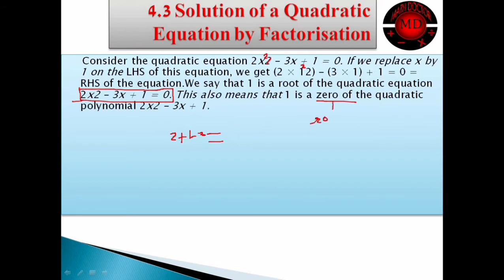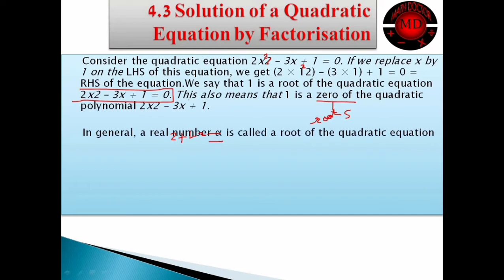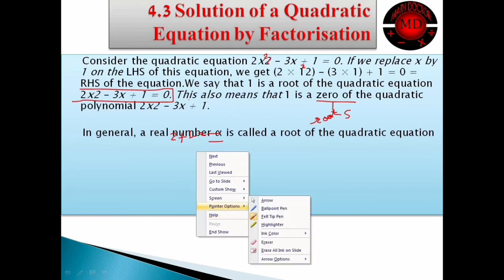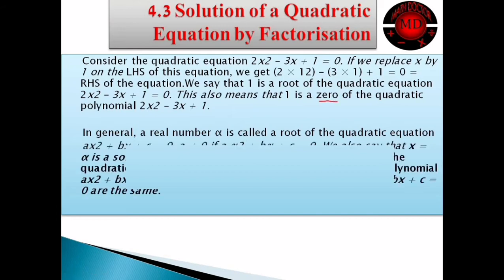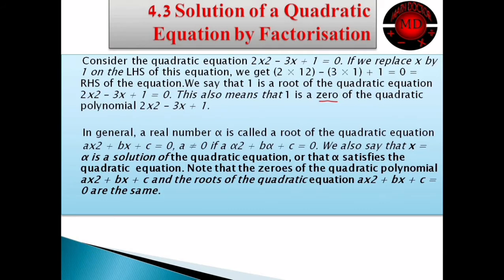So we say that 1 is a root of this quadratic equation. Any number which satisfies a specific quadratic equation is known as its root. This means 1 is also a zero of the quadratic polynomial. We use two terms: we call them roots or zeros. These are the two terms we use for the solution of a particular quadratic equation.